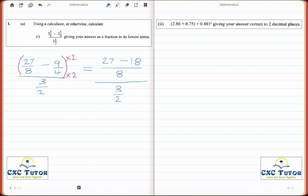27 minus 18 is equal to 9 over 8, and we still have our 3 over 2.